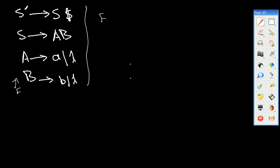First, we calculate FIRST(B), and it's obvious — FIRST(B) is {B, lambda}. So we take FIRST(B) = {B}, and FIRST(lambda) = {lambda}. So we've got this first set.